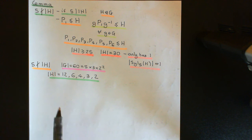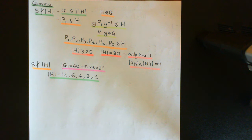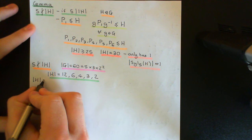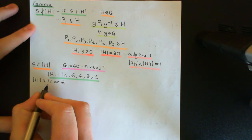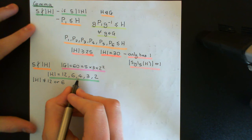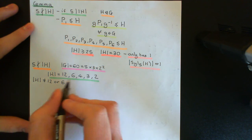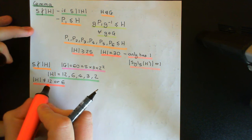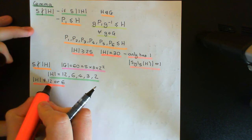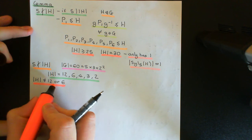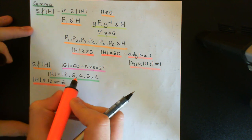We're going to go through each of these cases. We'll start by proving that the order of H cannot be 12 or 6, and we'll do this by reducing those cases down to the problem of showing that you cannot have a normal subgroup of order 4, 3, or 2 inside a group of order 60 with more than one Sylow-5 subgroup. Specifically, if a normal subgroup of size 12 or 6 exists, then a normal subgroup of size 4, 3, or 2 must also exist.